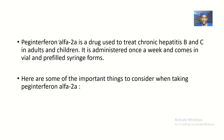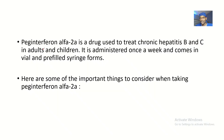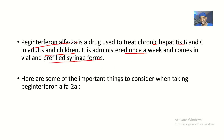Pegylated interferon alpha, also known as peg interferon alpha 2a, is a drug used to treat chronic hepatitis B and C. It can be used in treatment in adults and children. It is administered once a week and comes in vial and pre-filled syringe forms.